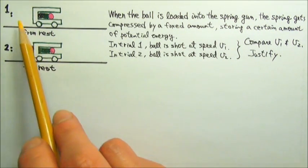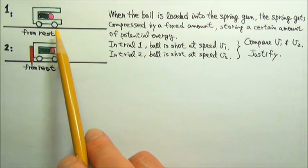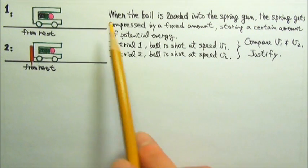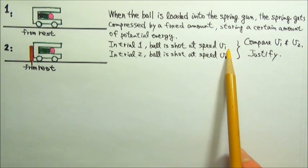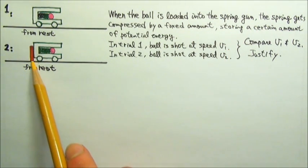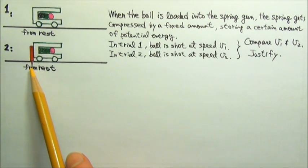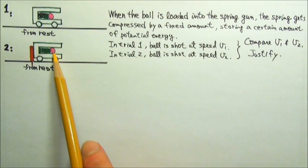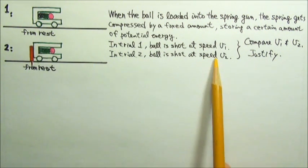In trial 1, the trigger of the loaded spring gun is pulled when everything is at rest. The ball is shot at speed v1. In trial 2, a barrier is attached to the table right behind the loaded spring gun. The trigger is pulled and the ball is shot at speed v2.